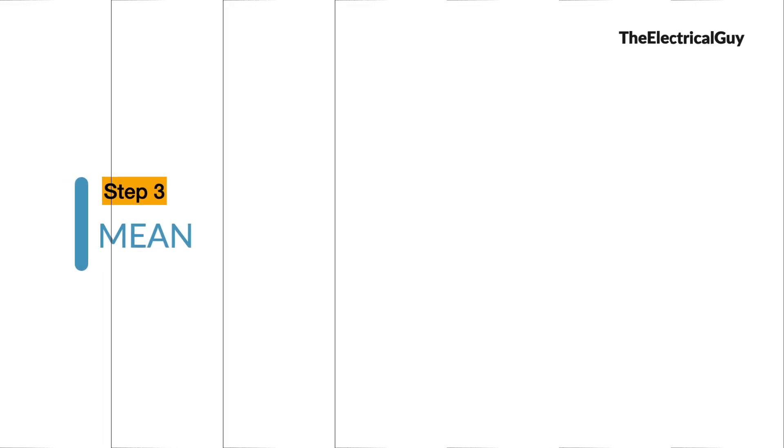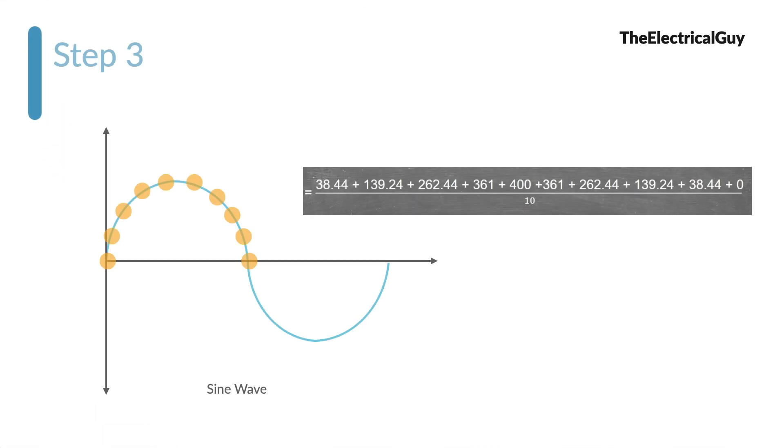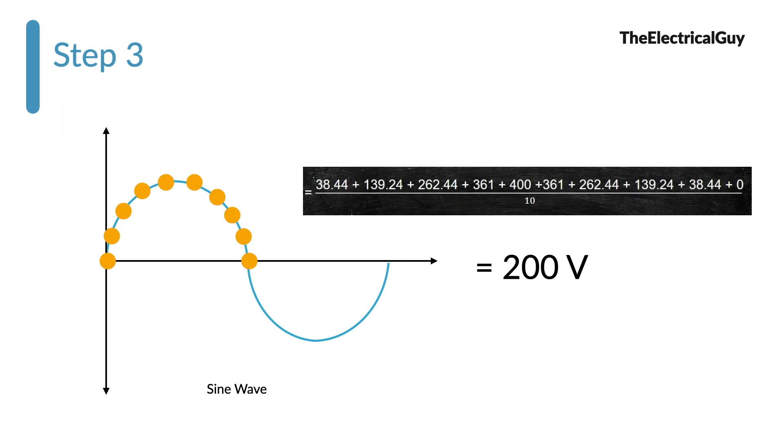Step number 3. Take the mean or the average. Simply take the average of all the values. And then the final step.